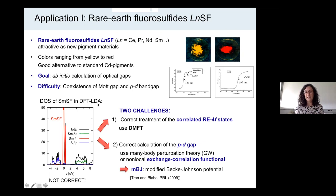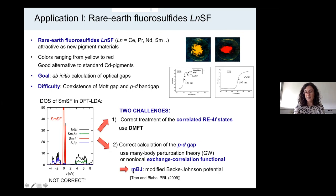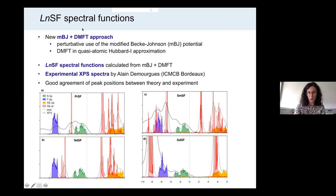In order to tackle this challenge, one basically needs to include non-local exchange. One could do a GW calculation, but one can also do something simpler: employ a non-local exchange-correlation functional in DFT, and that is what I did. I used the modified Becke-Johnson potential as implemented in the WIEN2k program package. So I have introduced this new MBJ plus DMFT approach, which works very well for this class of materials.